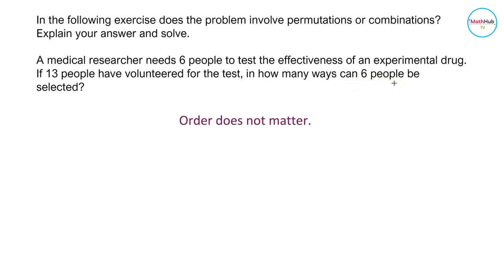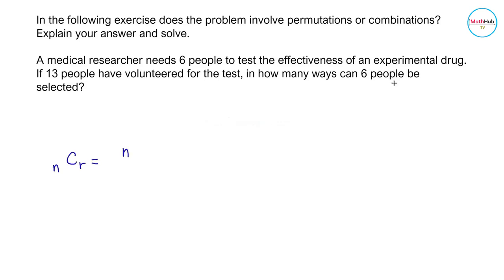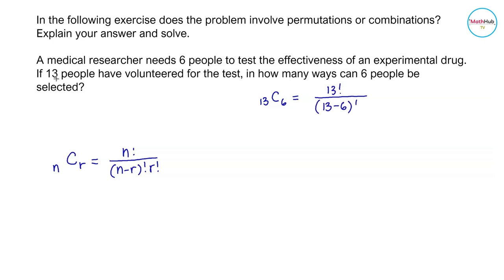The order in which these six people are selected does not matter, therefore this problem involves combinations. Using the combination formula C(n, r) = n! / ((n - r)! × r!), we can get the number of ways to select six people from 13 people. That is C(13, 6) = 13! / ((13 - 6)! × 6!).